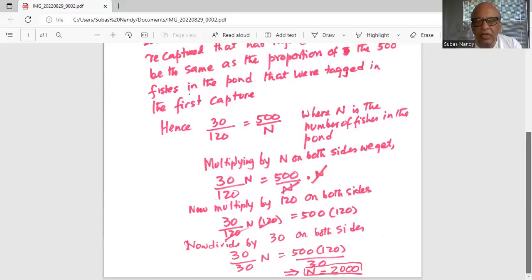Hence, 2000 is an estimate of the population of fishes in the pond.